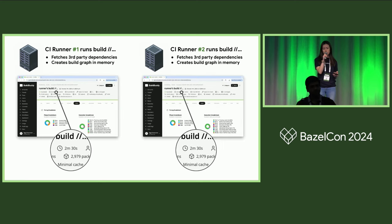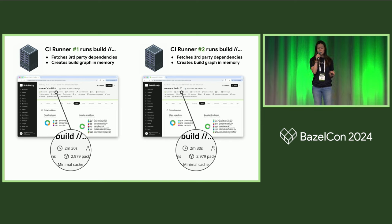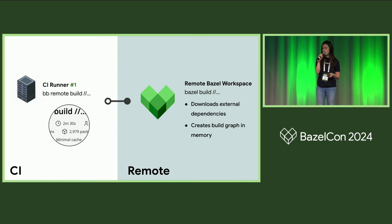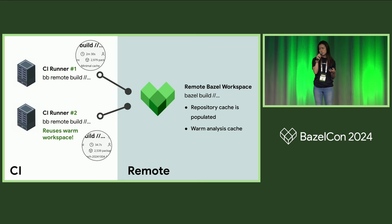Unfortunately, preserving the work from the analysis phase can be tricky, because the build graph is completely in memory. So if one CI runner initializes the Bazel workspace and a future CI run comes in, that CI run will have to redo all of that redundant work from scratch. One of the biggest benefits of Remote Bazel is that we reuse Bazel workspaces between runs, so a future CI run can reuse that warm workspace and not have to redo that slow, redundant work.